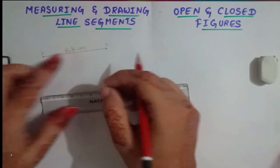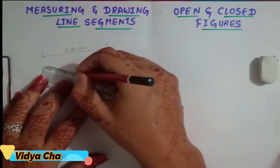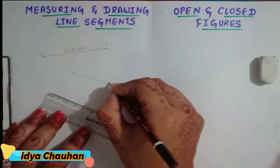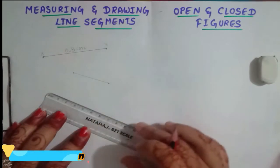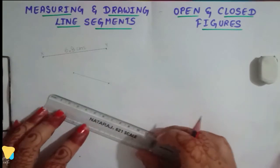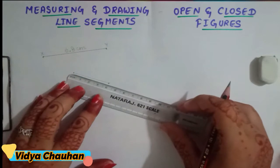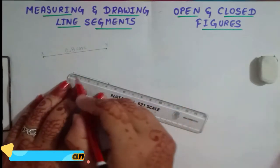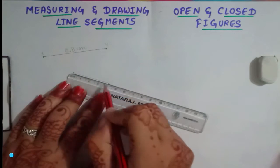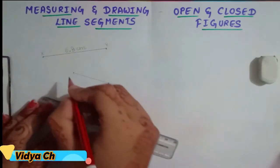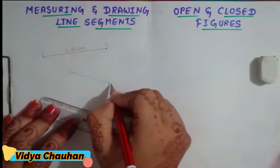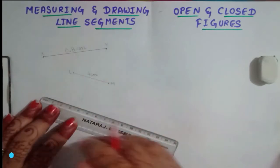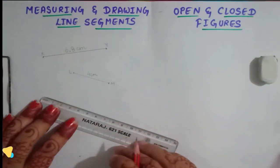Similarly, if I draw one more line segment, for measuring its length we again start from 0. If I name this line segment LM, it measures from 0 to 4, so the length of line segment LM is 4 centimeters.